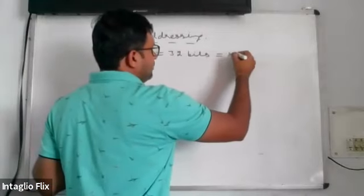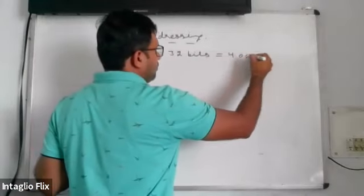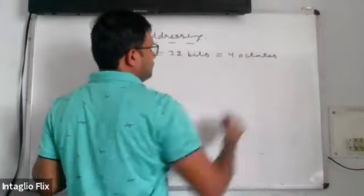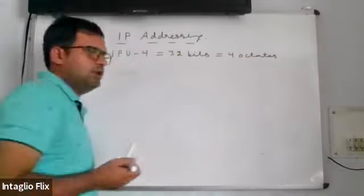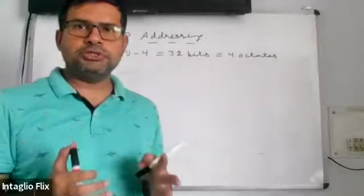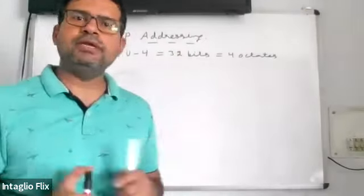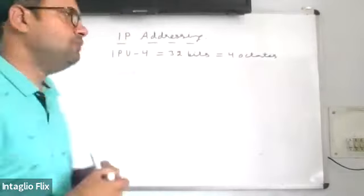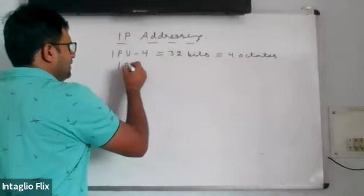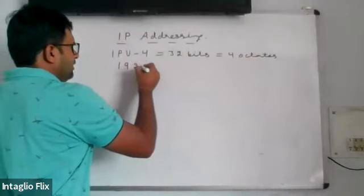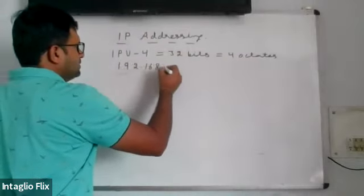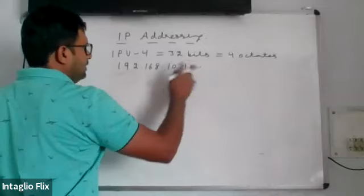An IPv4 address has four octets — four sections of 8 bits each. So an IP address looks something like this: 192.168.10.10.